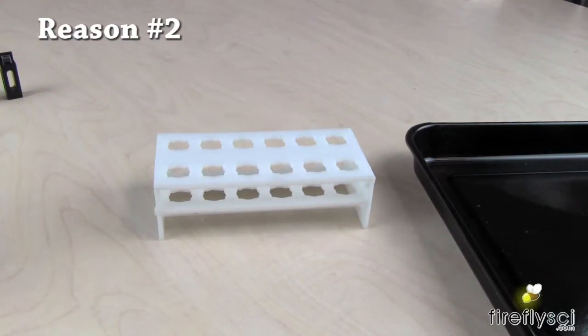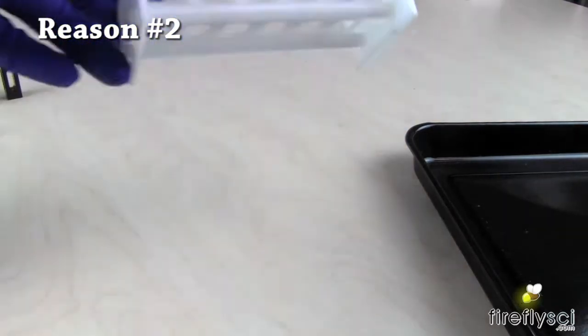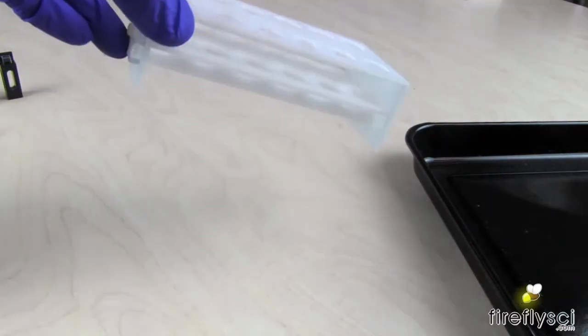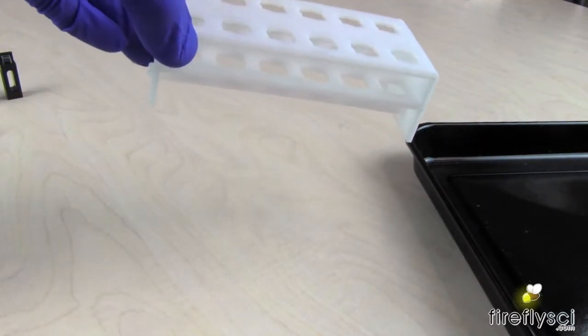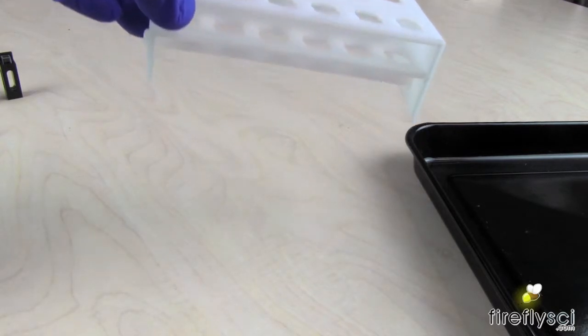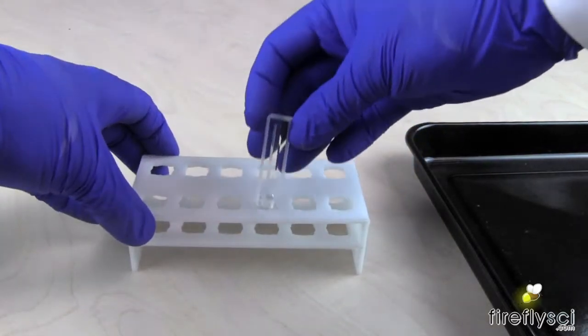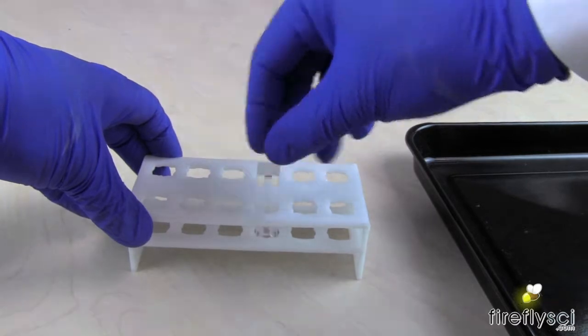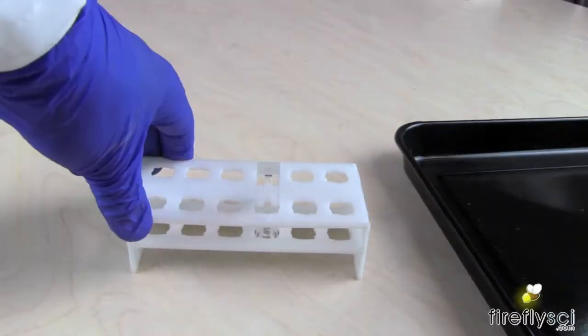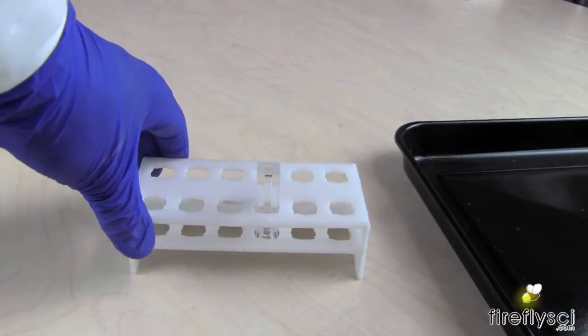Reason number two, good for drying cuvettes. Another thing I love about having a cuvette rack is that when I'm finished cleaning my cuvettes, I can just flip them over and let them dry in the cuvette rack. You can even get fancy and put a tray under the rack to catch any water that drips.